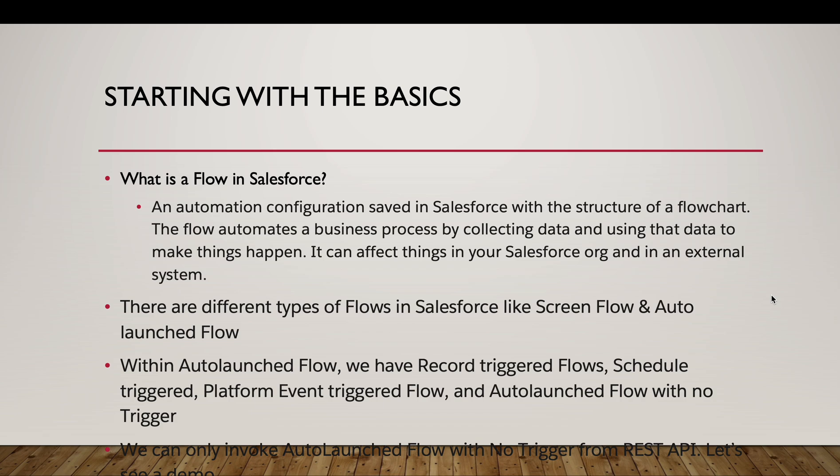Within the autolaunched flow we have many categories: record-triggered flow, scheduled-triggered flow, platform event-triggered flow, and autolaunched flow with no trigger. Autolaunched flow with no trigger means it can be invoked from another flow, an Apex class, or a REST API — which we are going to see in today's demo. One important thing: we can only invoke this autolaunched flow with no trigger using REST API, not any other flow type.